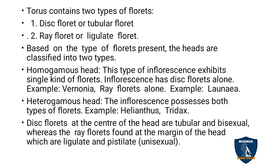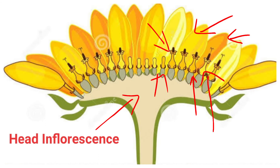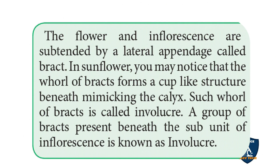In head inflorescence, the ray florets are at the periphery and disc florets are in the centre. Each floret in the inflorescence is subtended by a lateral appendage called a bract. In sunflower, a whorl of bracts forms a cup-like structure beneath the head, mimicking a calyx — this is called the involucre. The group of bracts present beneath the subunit of the inflorescence is known as the involucre.